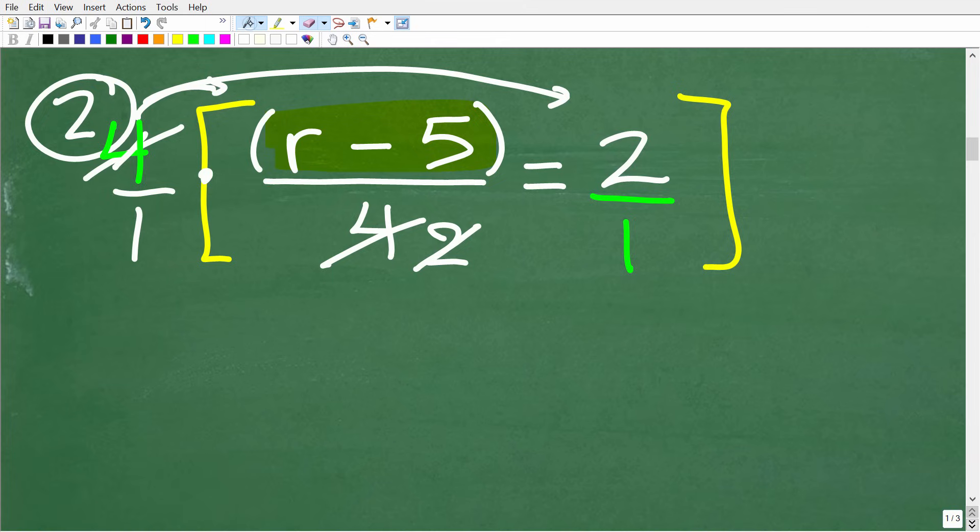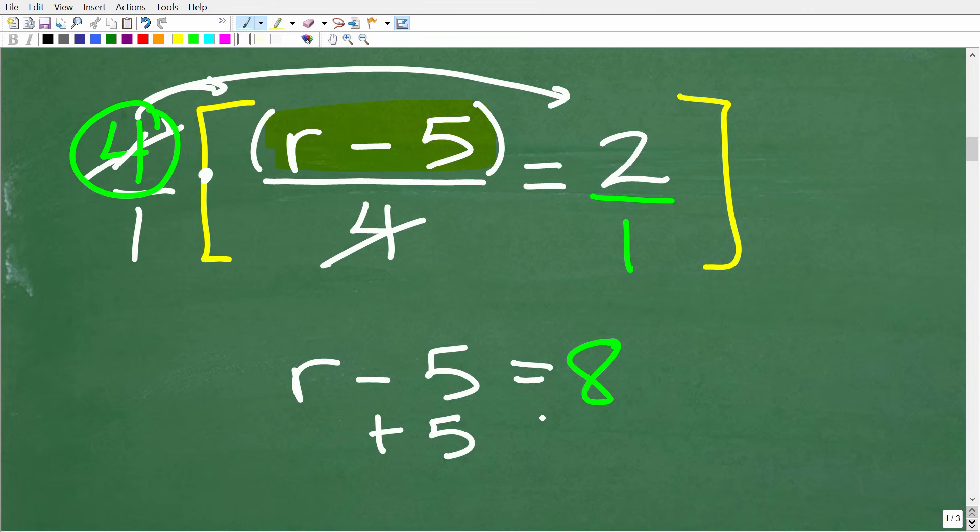But on the left-hand side, we end up with an r minus 5. Okay, now we still have to multiply this 4 to the entire equation, each term, right? So 4 times r minus 5 over 4. We saw that was just equal to r minus 5. And now 4 times 2 is 8. Okay, so now we have the equation r minus 5 is equal to 8. So to solve for r, all we have to do again is add 5 to both sides of the equation. So r again is equal to 13.